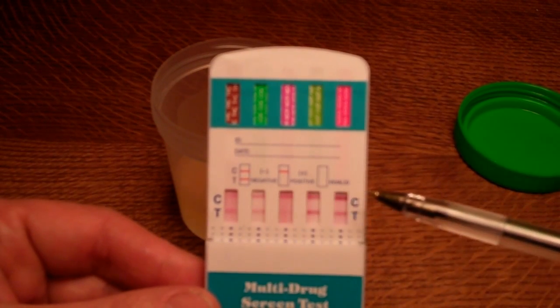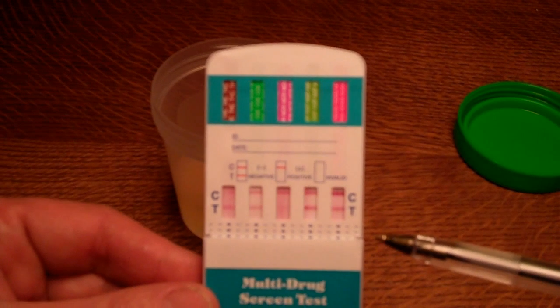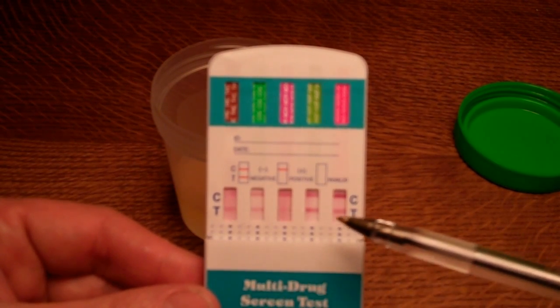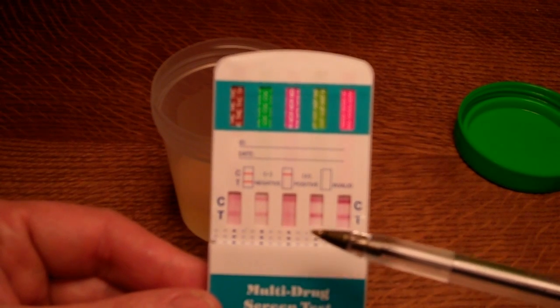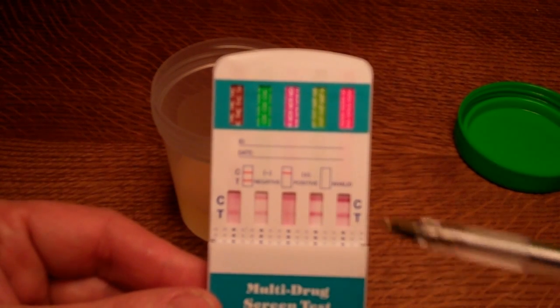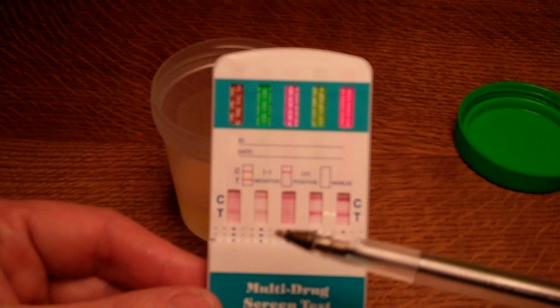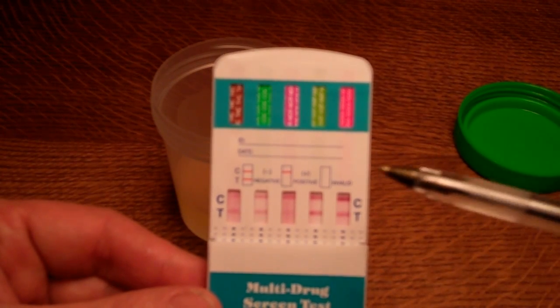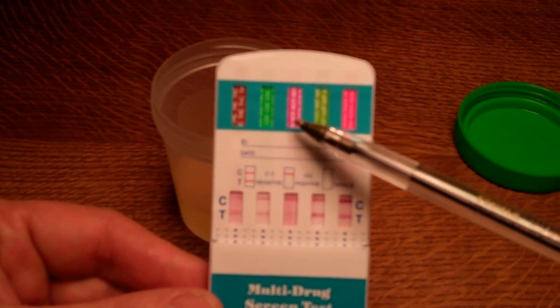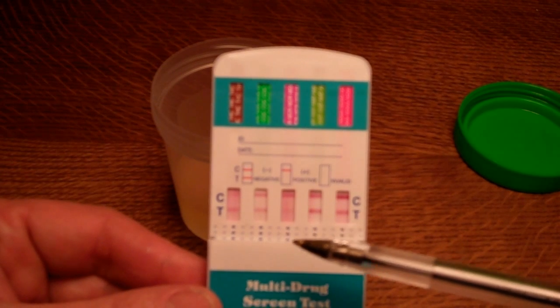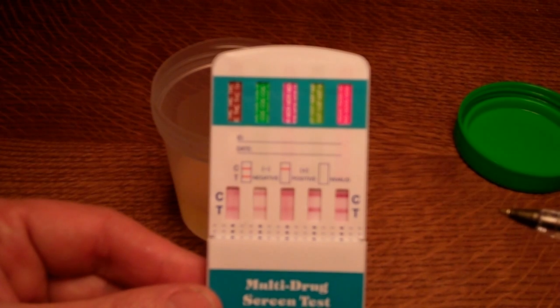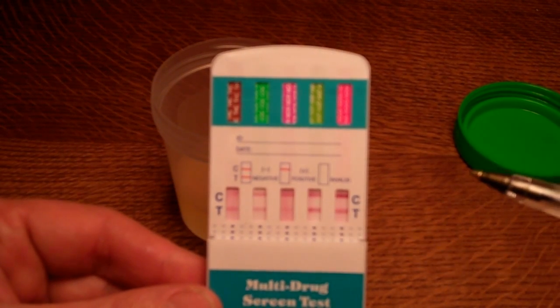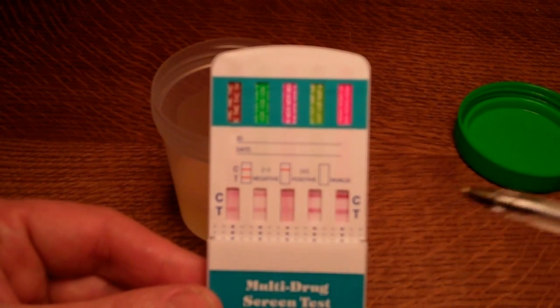On this particular panel, we can see that we've got control lines forming on all five drugs and we've also got test lines forming on all five drugs. Now you will notice that there's quite a bit of variance between the different test lines in terms of their thickness, the color density and saturation. Particularly on this test membrane on the MOR opiate test, the test line is still quite vague.